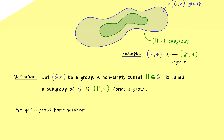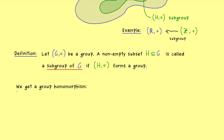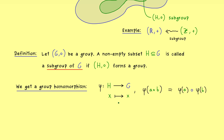We can immediately make the connection to the last video by showing we have a group homomorphism. Consider the map phi from H into G defined by sending x to x — the identity map. This map obviously satisfies the defining property of a group homomorphism because the binary operation on both sides is the same, so we just have a combined with b on both the left and right hand side.